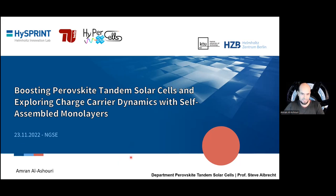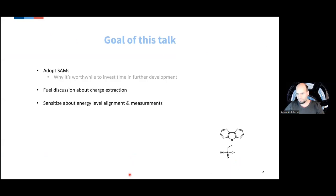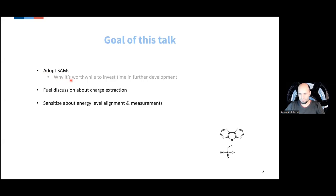Welcome to this talk. I have the pleasure of reporting what we've done at the Helmholtz Centrum Berlin regarding perovskite solar cells. By the end of this talk you will know mostly three things: first, why it's worthwhile to adopt SAMs into your workflow if you haven't already, why it could pay off to invest further time in the development of self-assembled monolayers as charge selective layers, and I also want to fuel the discussion about charge extraction in the community. We talk a lot about charge losses and recombination losses, mainly because I think it's easier to measure than charge extraction, since it's a transient process.